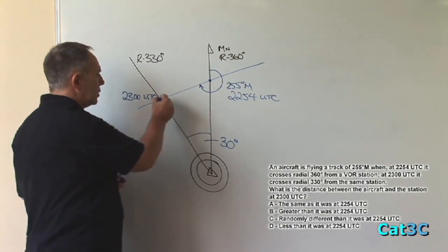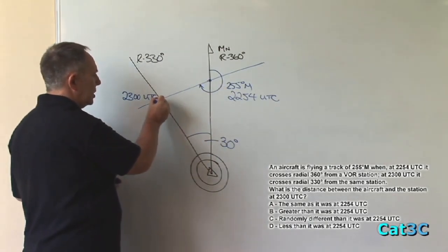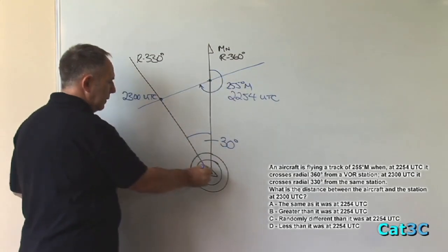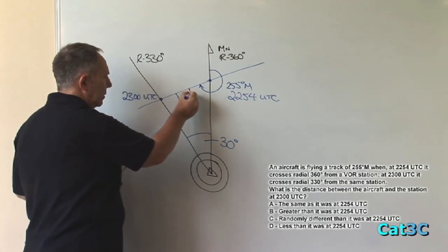Note that we have a triangle between the three positions: aircraft position, aircraft position, VOR. Inside the triangle, we have another two angles.